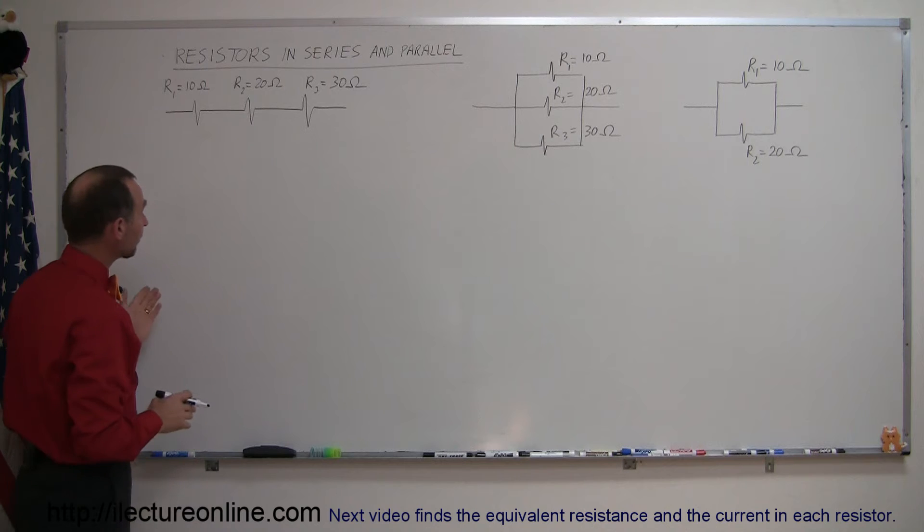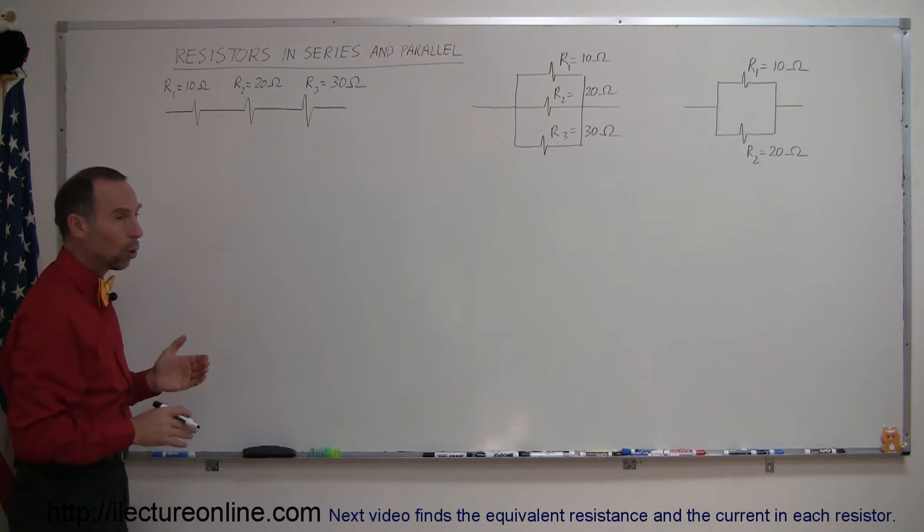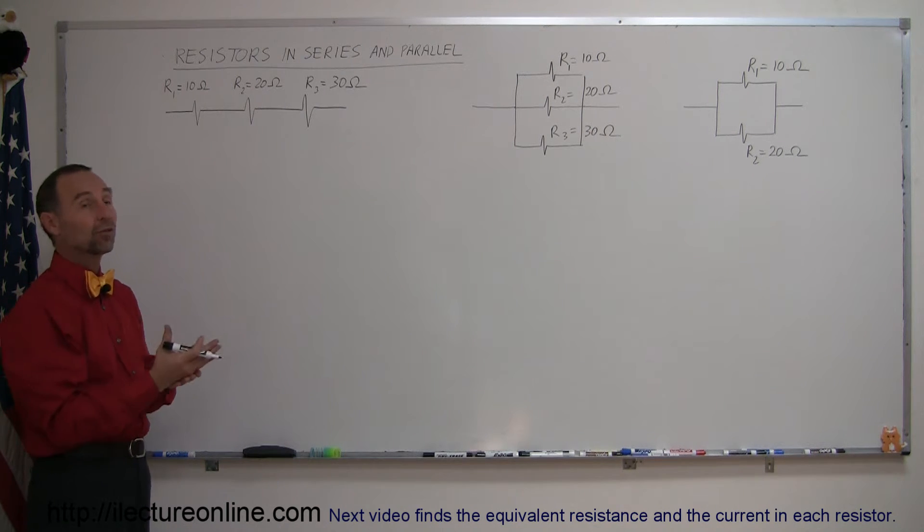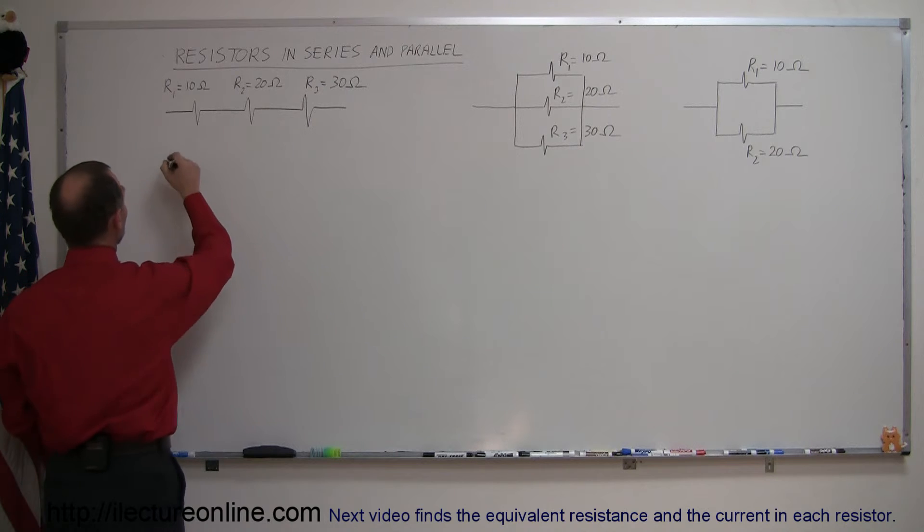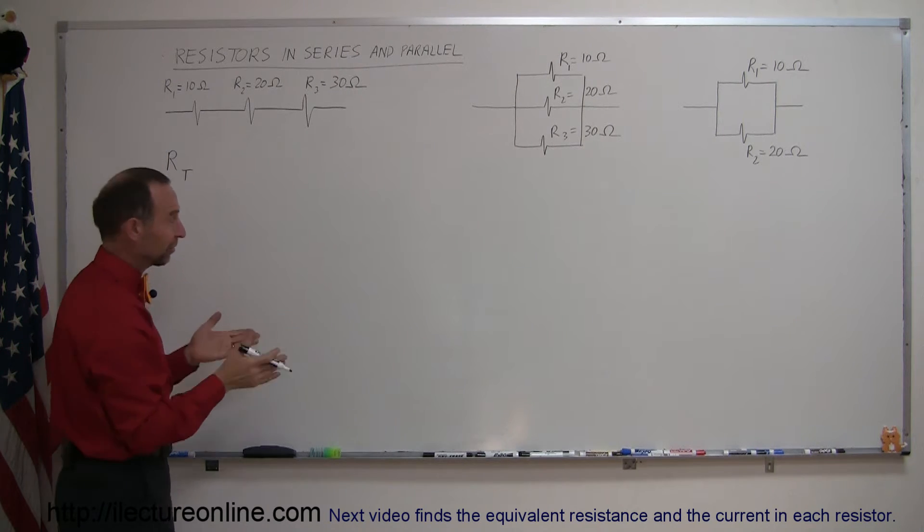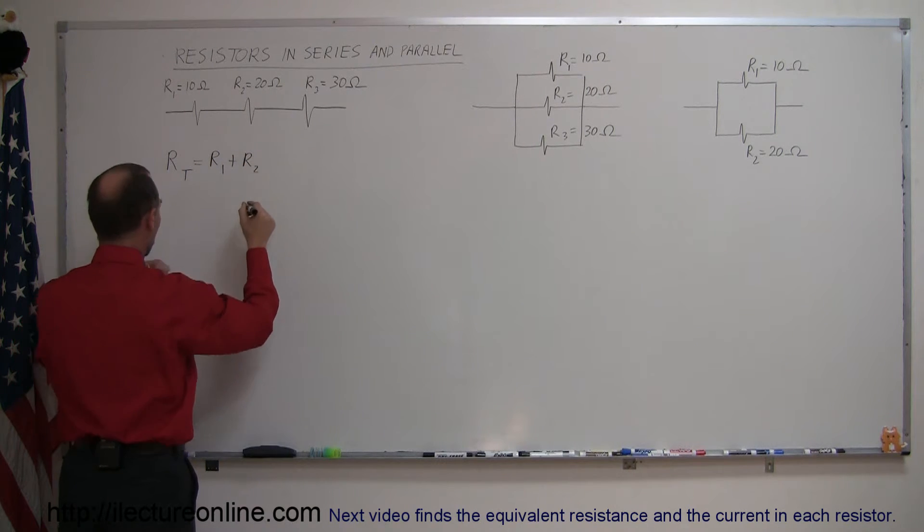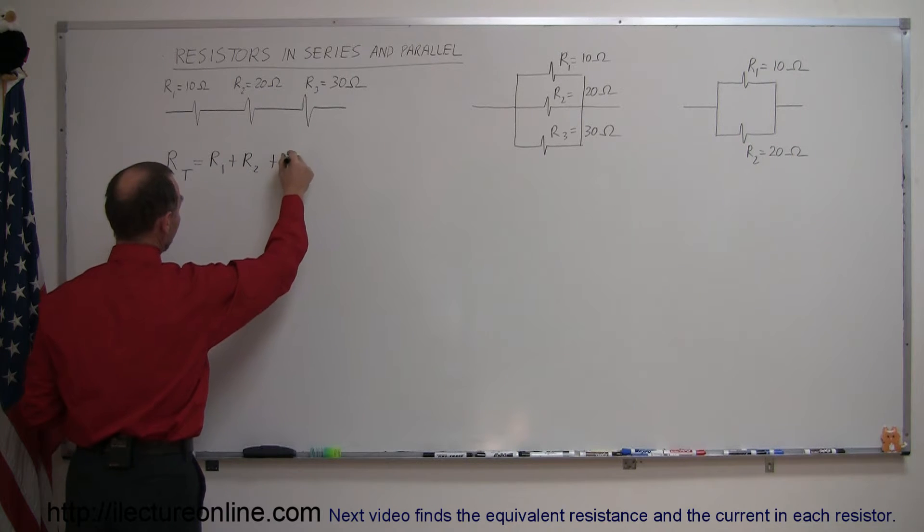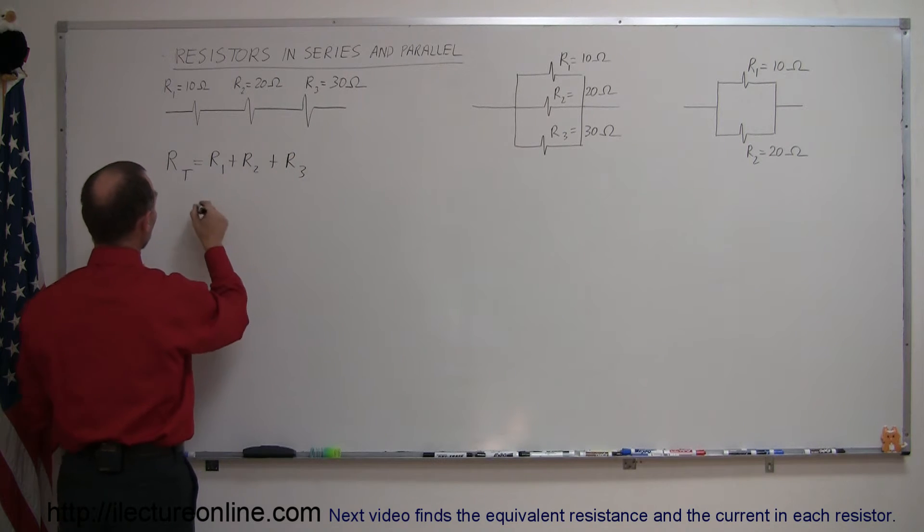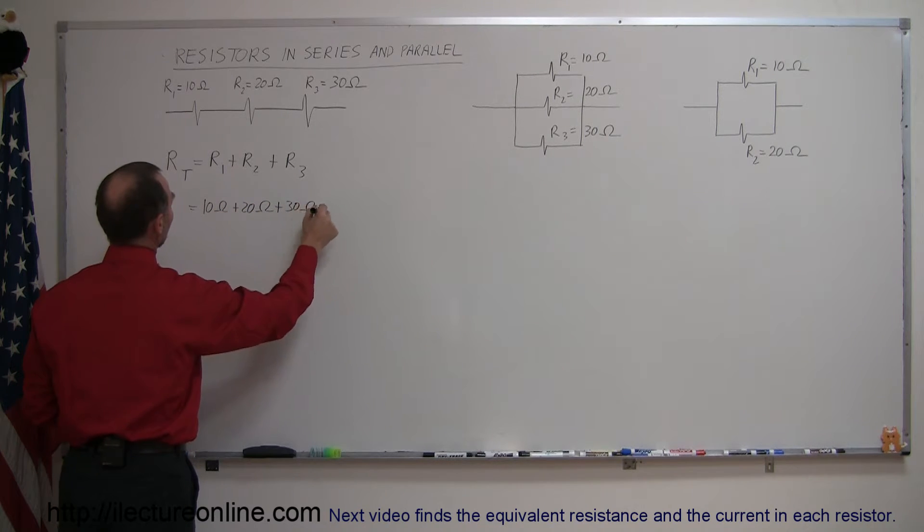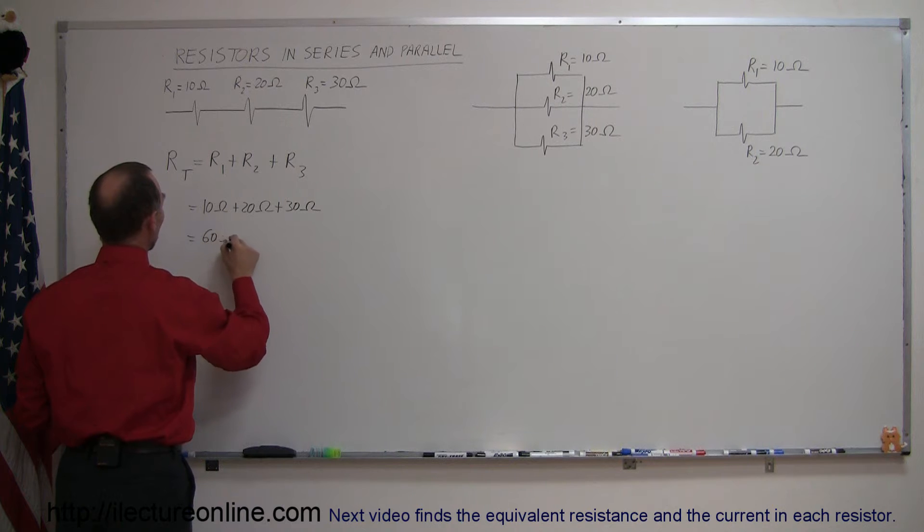But in general if you want to find the total or what we call equivalent resistance and the resistors are in series, we can do that by saying that the total or equivalent resistance is equal to simply the sum of the three resistors. Like so. So that's very simple. This is simply equal to 10 ohms plus 20 ohms plus 30 ohms, and so that's equal to 60 ohms. That's a very simple way of calculating the total resistance.